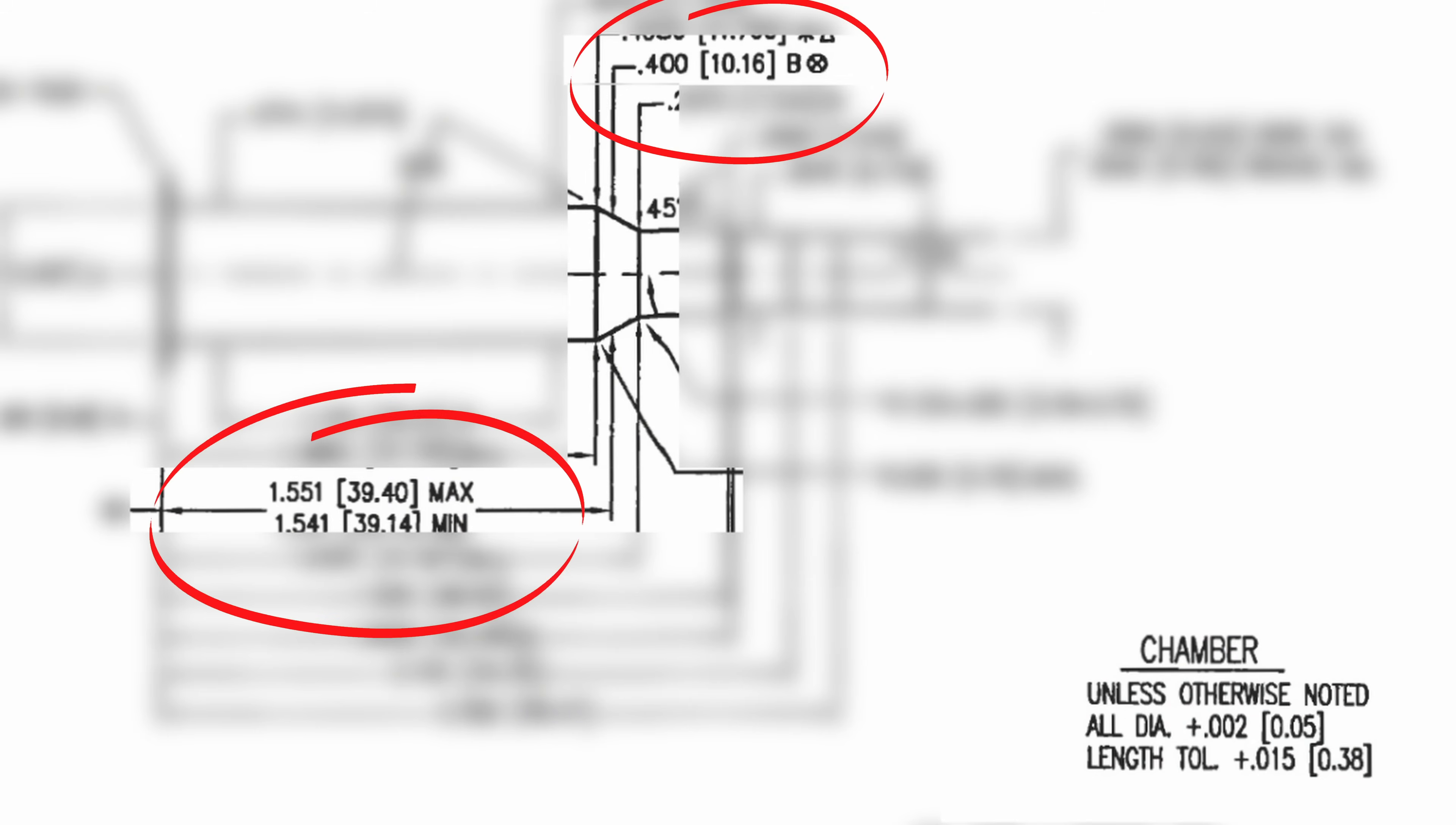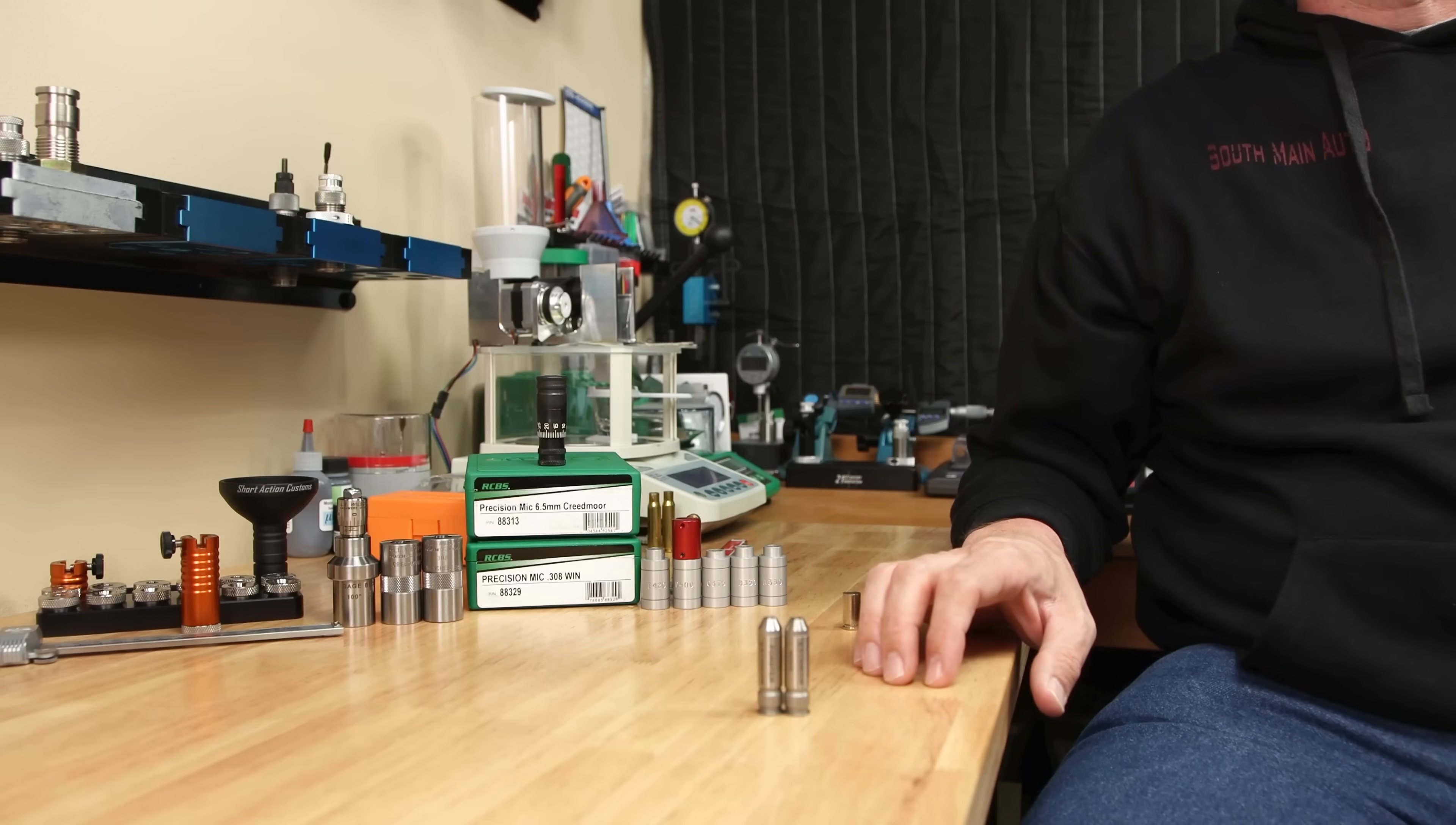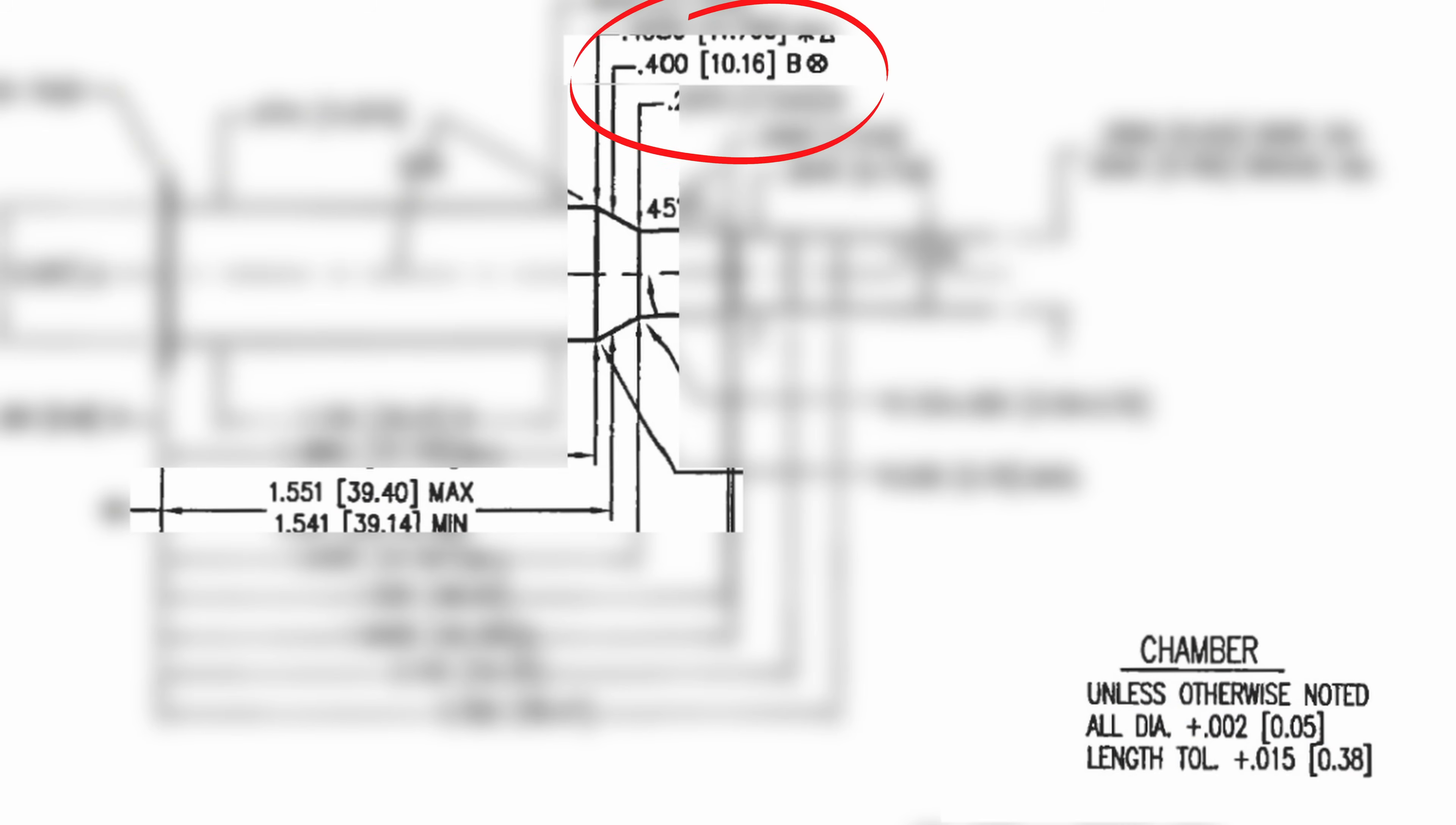For 6.5 Creedmoor, it lists a max of 1.551 inches and a min of 1.541 inches. Do I personally need that info? Not really. I'm most interested in the dimension of 0.400 inches, as this will be the datum dimension that I'm going to be comparing from.